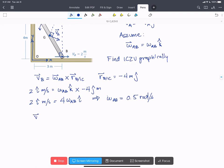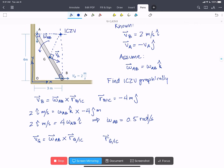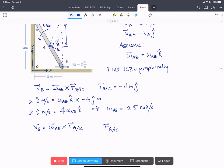So we can write that VG equals omega AB cross RG with respect to the IC. RG with respect to the IC, because it's halfway here and halfway here, we're going to find that is minus 1.5 i-hat minus 2 j-hat meters.